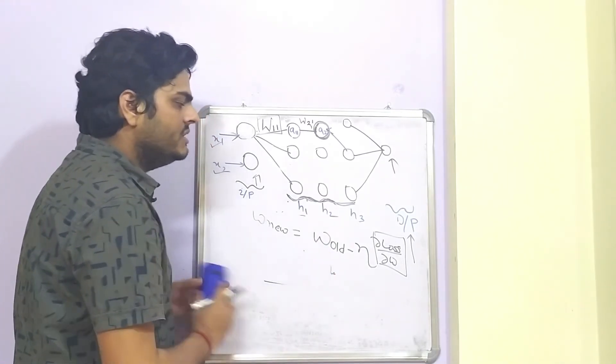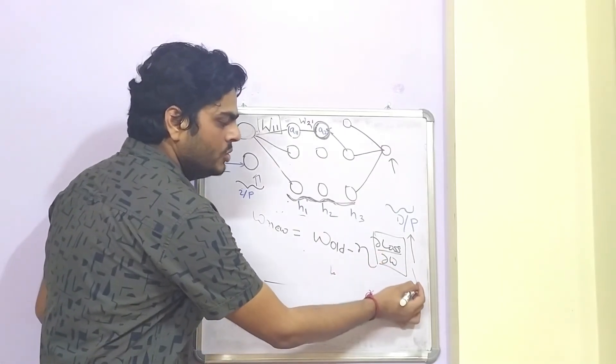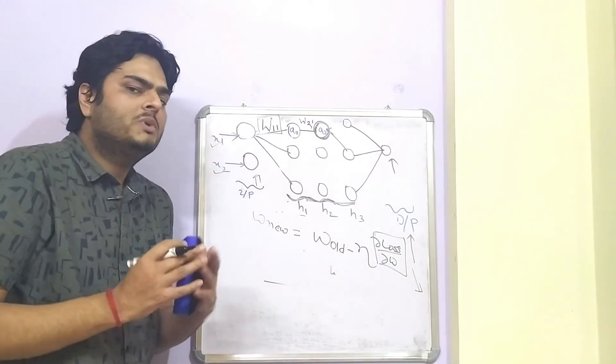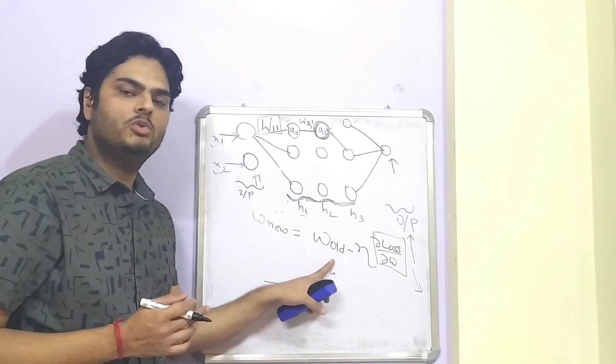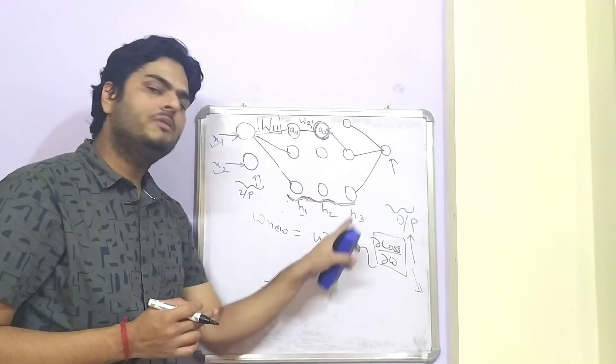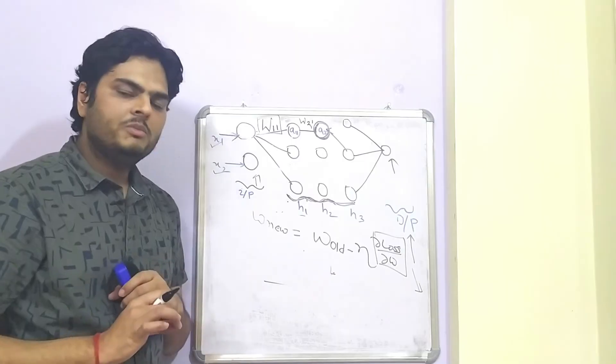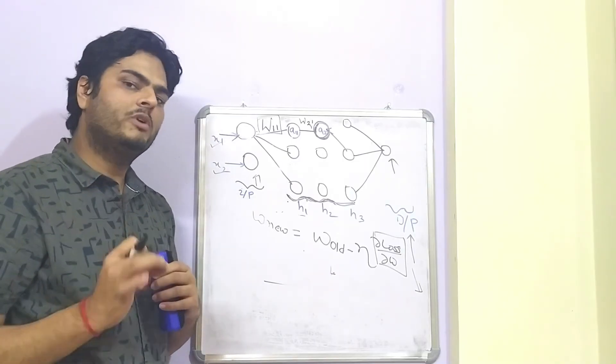And when this derivative becomes low, then what happens is there will not be too much difference between w new and w old because this term itself is very small. That problem is called vanishing gradient problem.